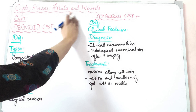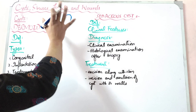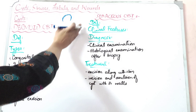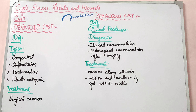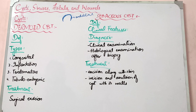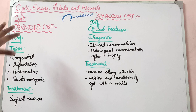A cyst is swelling in the body which is lined by true endothelium or epithelium. The definition of a cyst is a collection of fluid-filled cavity lined by endothelium or epithelium. It should be fluid-filled and movable. Pseudocysts don't have an endothelial or epithelial lining — they are not true cysts.